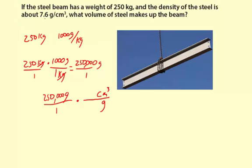So what about the 7.6? Well, 7.6 grams per cubic centimeter means we have 7.6 grams for 1 centimeter cubed. So that means 7.6 goes in the denominator, and the 1 centimeter cubed goes in the numerator. So then the grams simplify out, and we have centimeters cubed in the numerator. That's going to be the units for our answer.